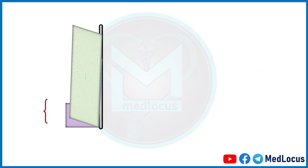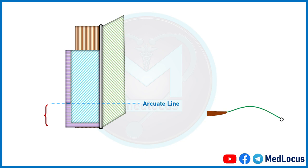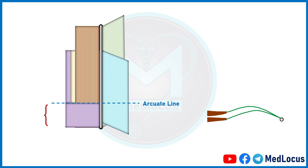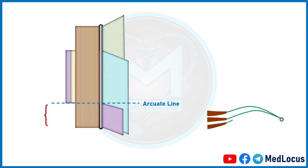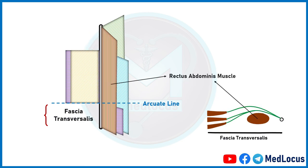Now we will talk about the formation of the rectus sheath below the arcuate line. The aponeurosis of the external oblique muscle is reflected and drawn first, then the aponeurosis of the internal oblique muscle, and then the aponeurosis of the transversus abdominis muscle. The rectus abdominis muscle is then reflected and drawn. After reflecting the rectus abdominis muscle, we see the fascia transversalis, which is also drawn in our schematic diagram.